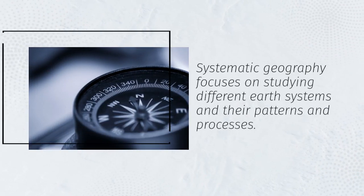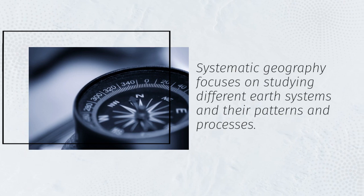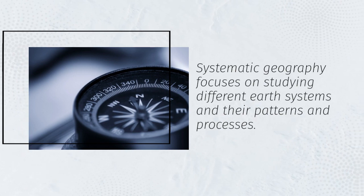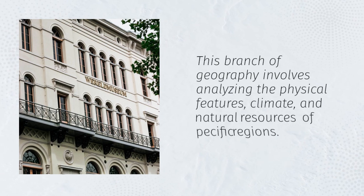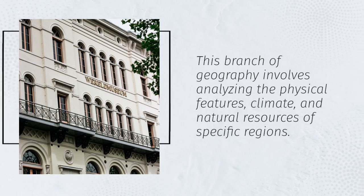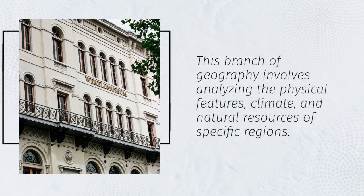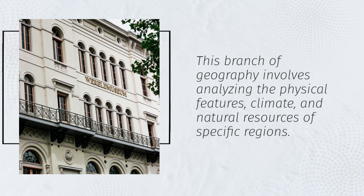Systematic geography focuses on studying different earth systems and their patterns and processes. This branch of geography involves analyzing the physical features, climate, and natural resources of specific regions.